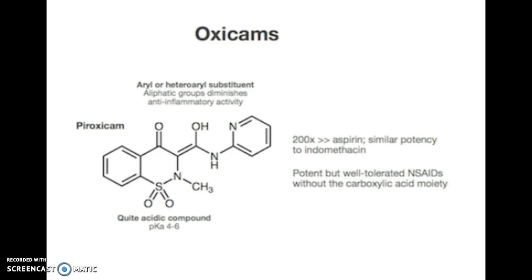This drug, piroxicam, is known as one of the potent inhibitors of prostaglandin production. Prostaglandin is known to mediate pain, and so if we inhibit this prostaglandin, it means we can suppress the pain. As you can see here, piroxicam is 200 times more potent than aspirin.